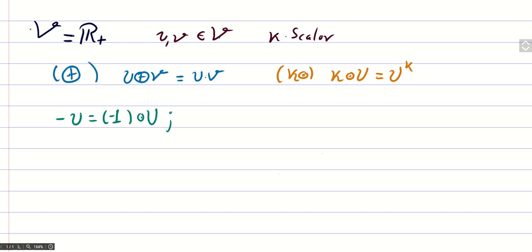Hello there, so for this exercise we got this space of real positive numbers. In this case u and v will be just real positive numbers, and k will be any scalar, so basically k could be any real number, even the negative ones. So the point is that in this vector space...